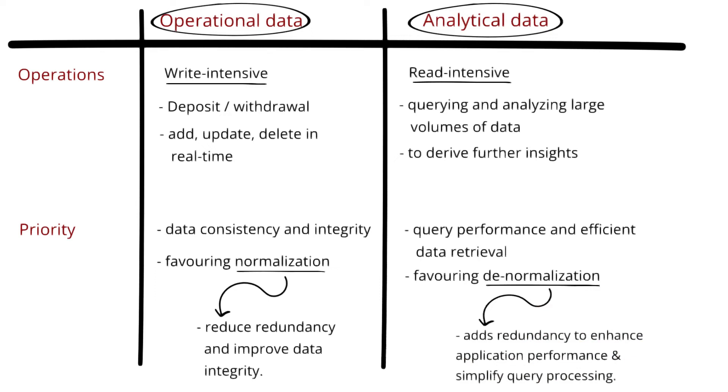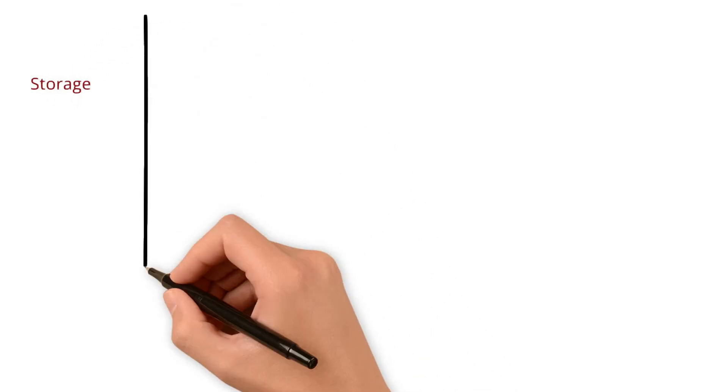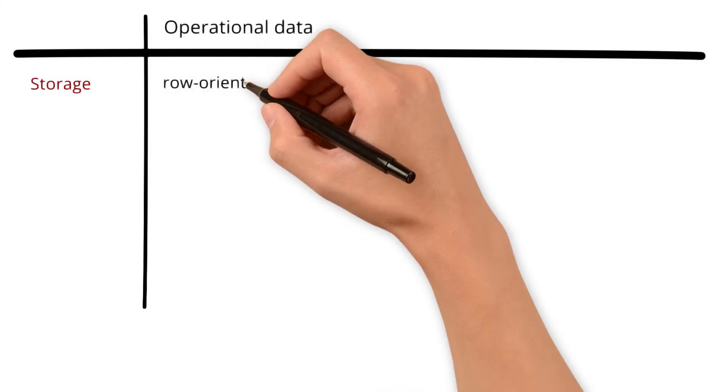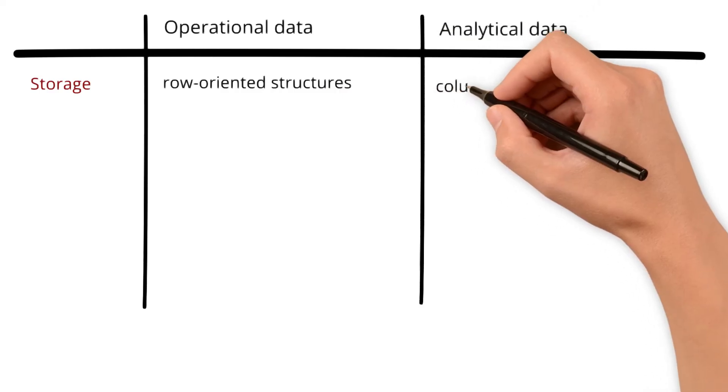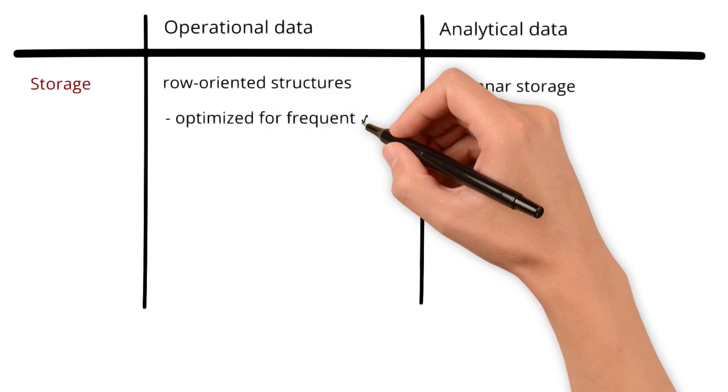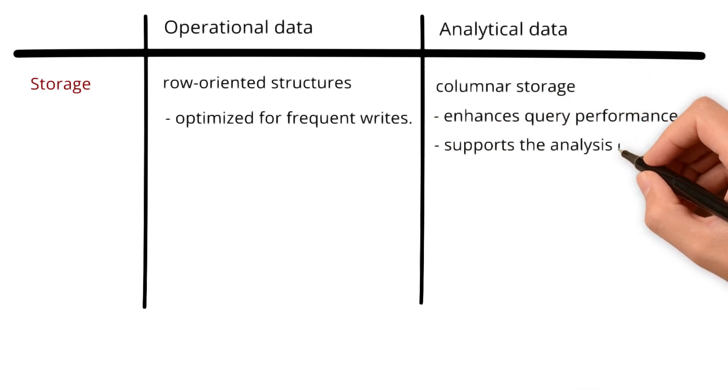Covering the differences in terms of characteristics, let's talk about the storage mechanisms of this data. Operational data is often stored in row-oriented structures, while analytical data utilizes columnar storage. Here are the reasons. Operational data is often stored in row-oriented structures because it is optimized for frequent writes, while analytical data uses columnar storage, which enhances query performance and supports the analysis of large data sets.